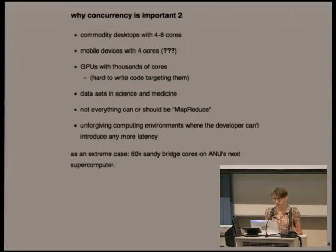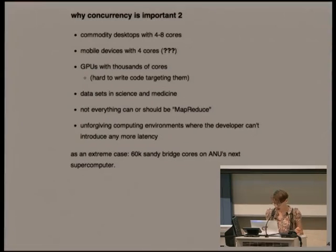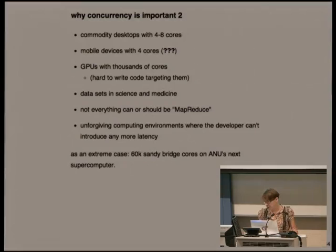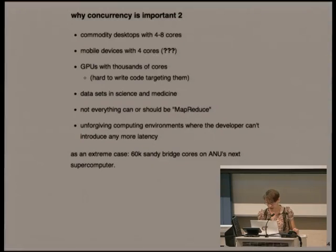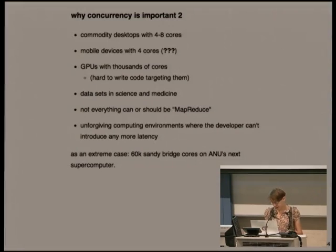Anyone who has a gaming system has a GPU with thousands of cores. It is hard to write code targeting them. A lot of people, particularly those who work in science and medicine, even on trivial problems will have something like a 600 gigabyte dataset. The kind of turnaround you need on projects like that — if you have such limited resources, you need to take full advantage of the computing that you do have.